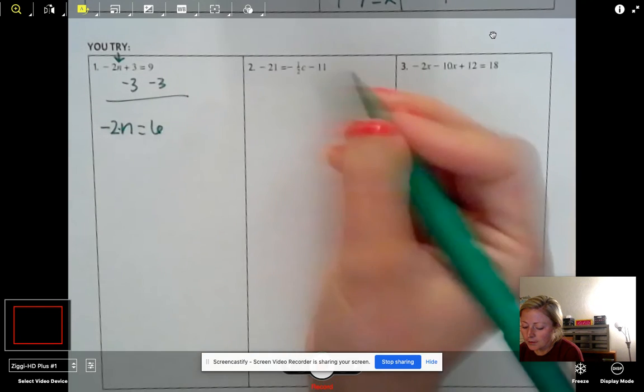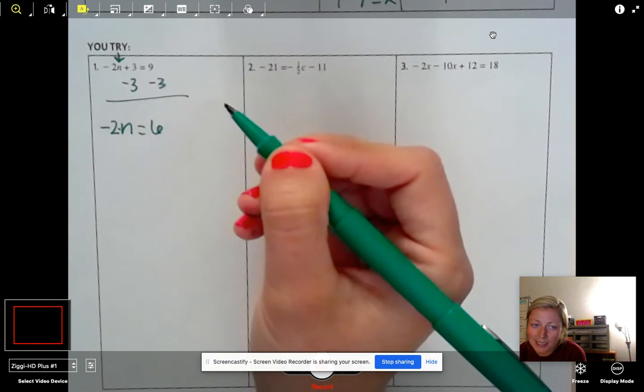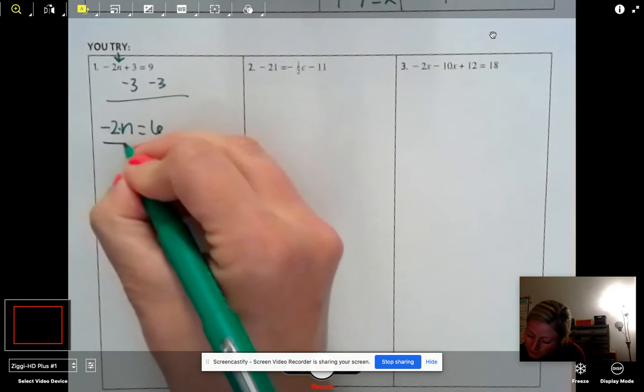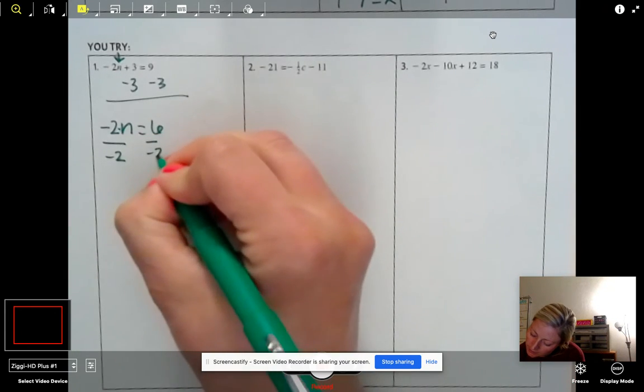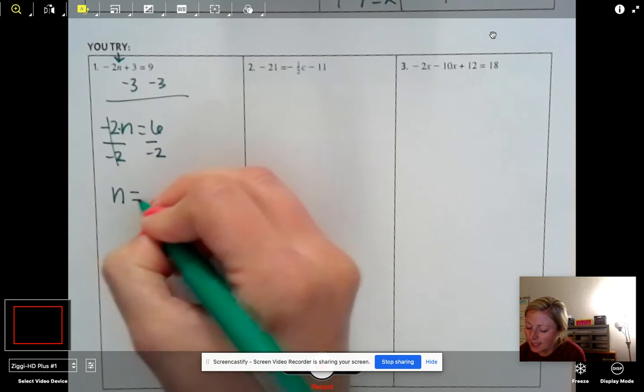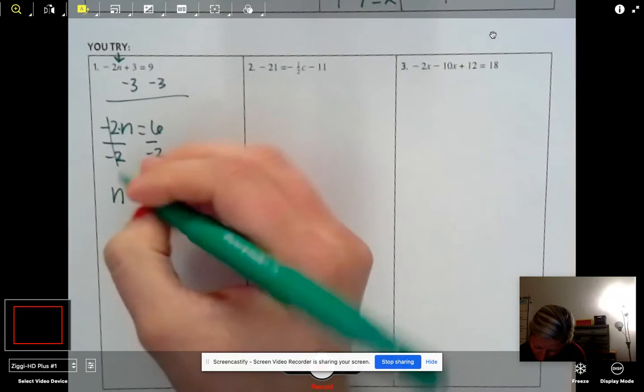Good work. And now I'm taking negative 2 times n. What's the opposite of timesing by negative 2? You're right. Dividing by negative 2. Our negative 2's cancel. We are just left with n. 6 divided by negative 2 is indeed negative 3.